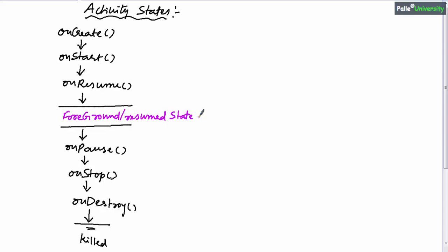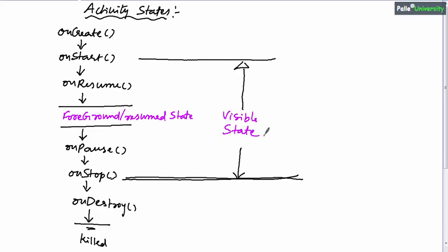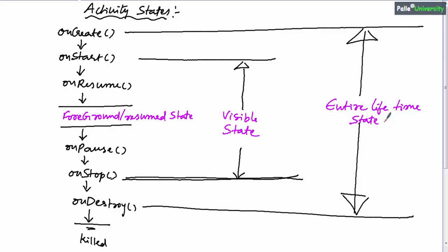Similarly, the time between onStart and onStop is considered the visible state, because only after calling onStart will your screen be visible to the user. onStop is called once your screen becomes completely invisible to the user. So when control is between onStart and onStop, your screen is visible — that's why it's the visible state.